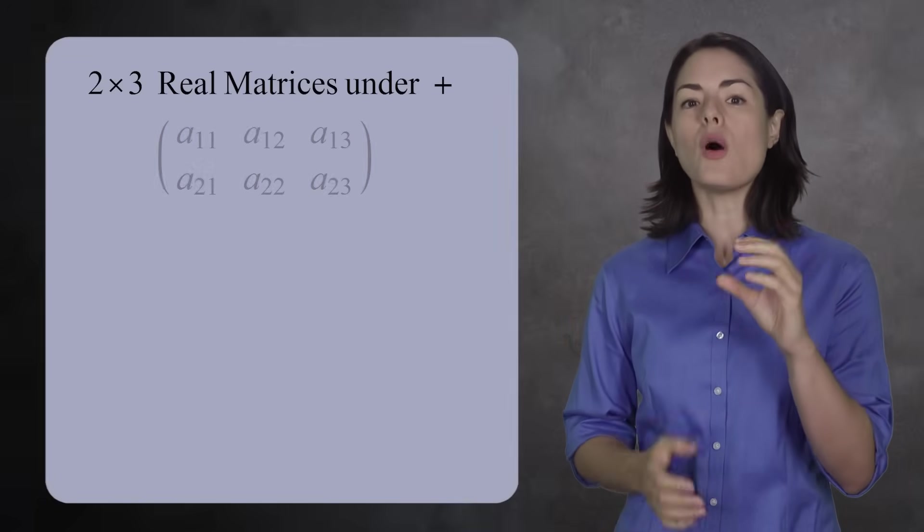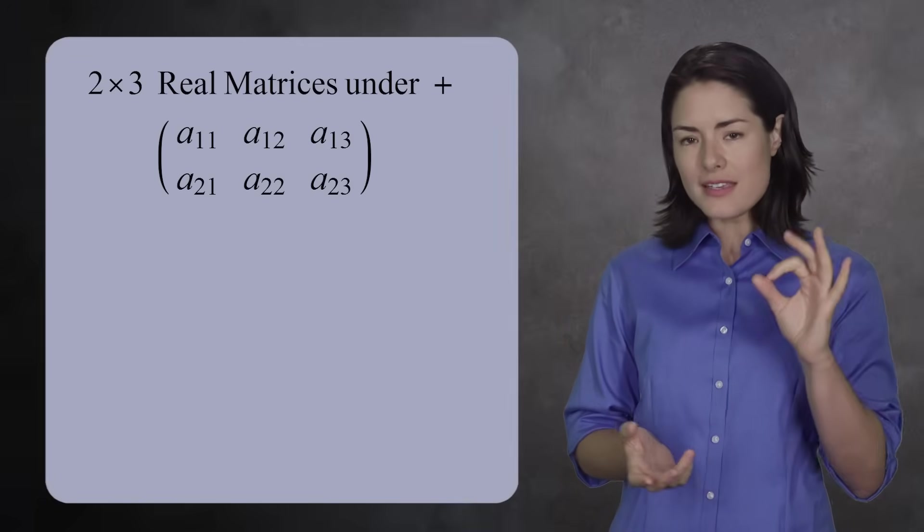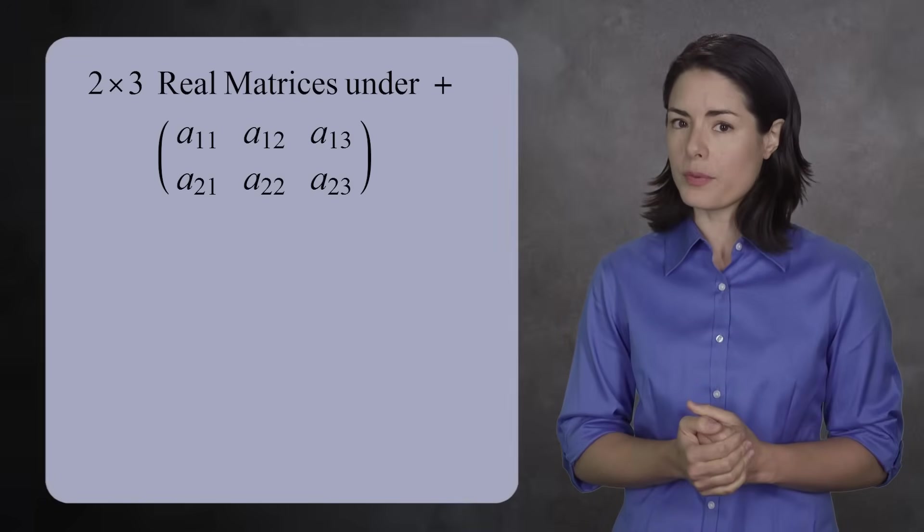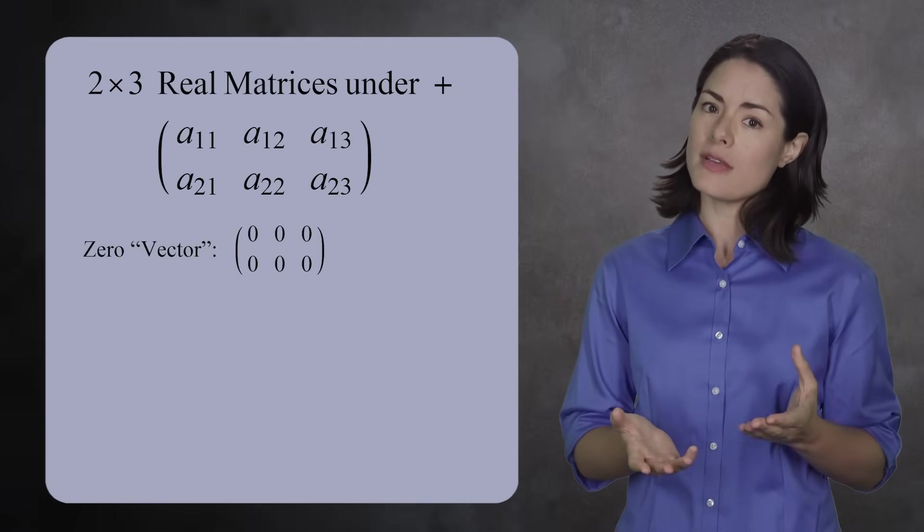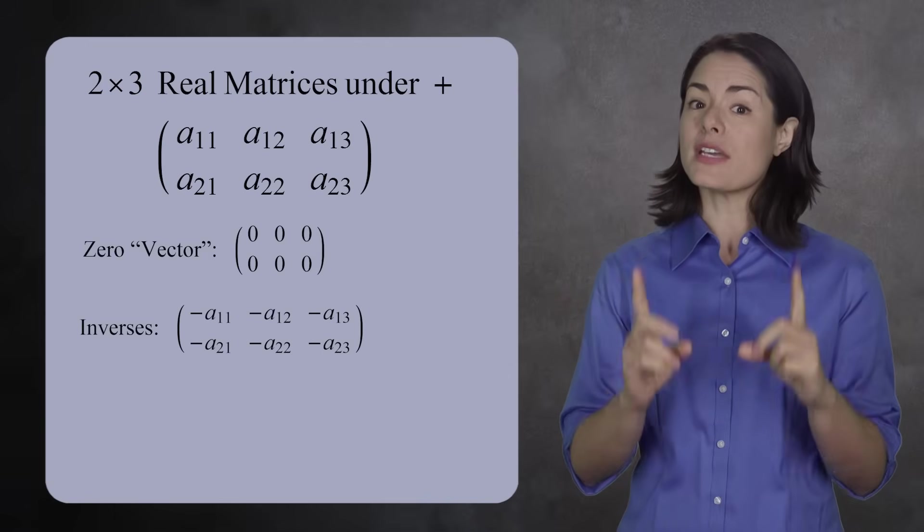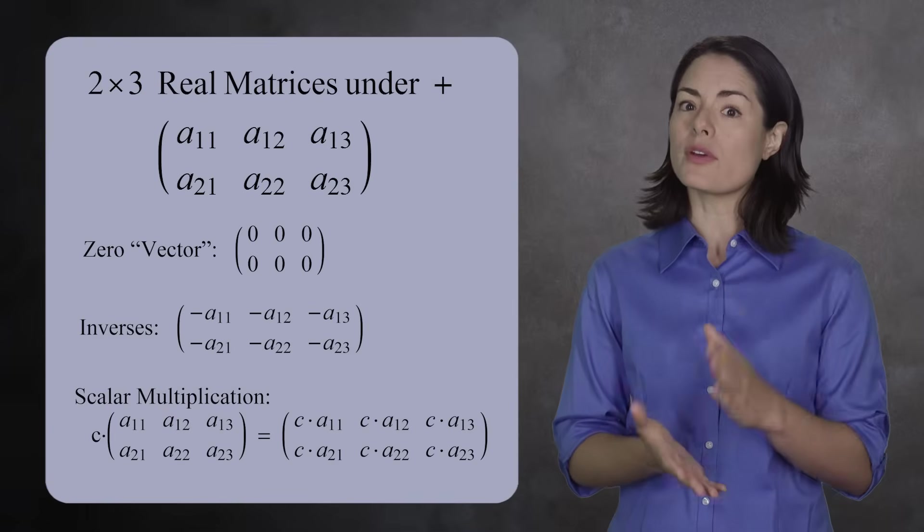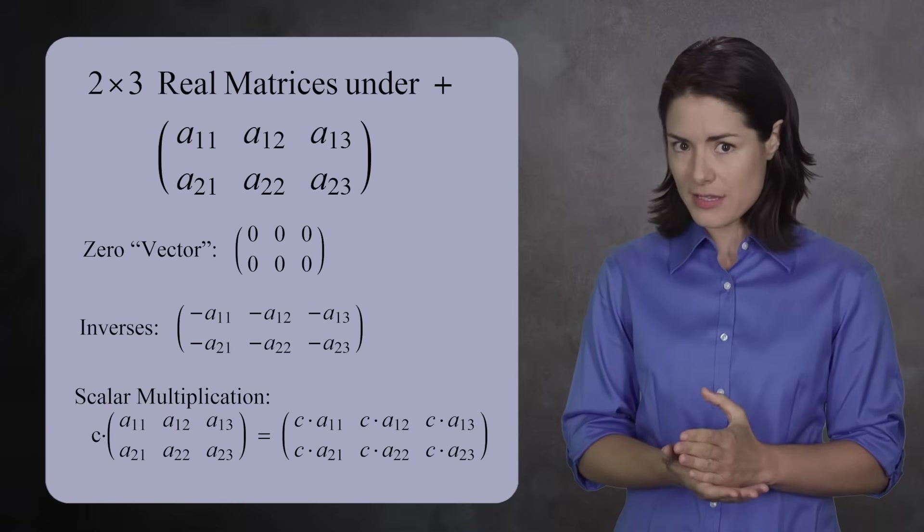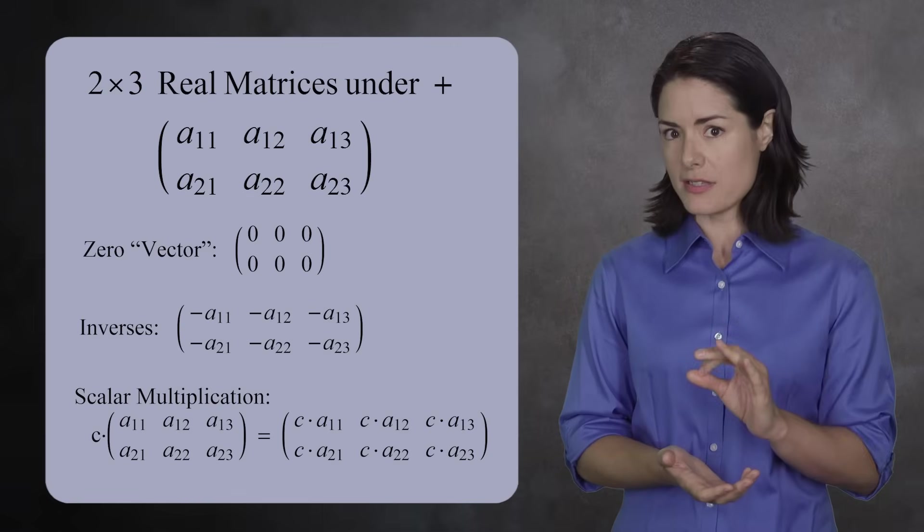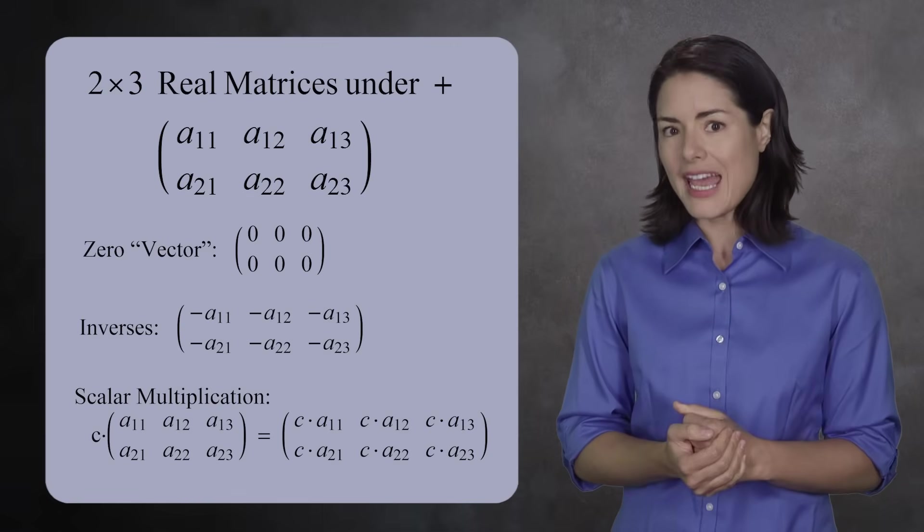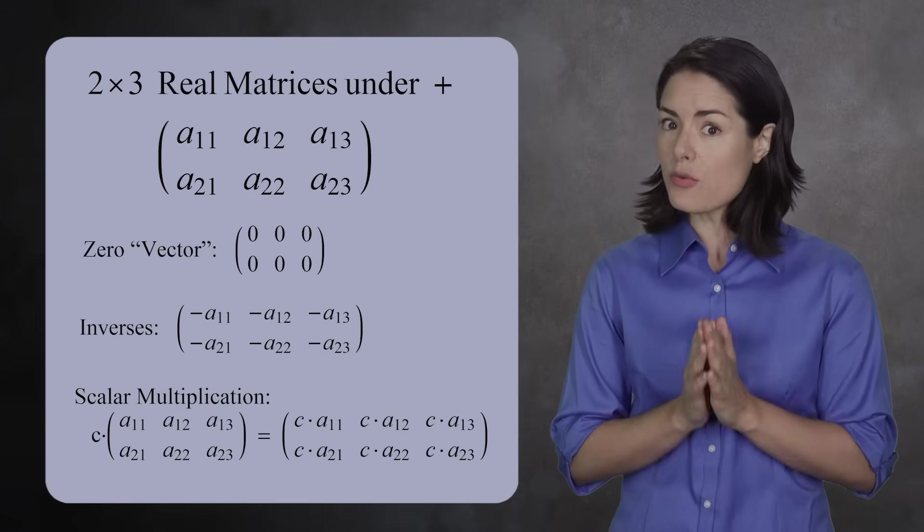For example, consider all 2 by 3 real matrices. These matrices form a commutative group. You have a 0 matrix, inverses, and you can even multiply any matrix by a real number to get a scaled matrix. The 2 by 3 real matrices form a vector space. And it's a good exercise to check the remaining properties.